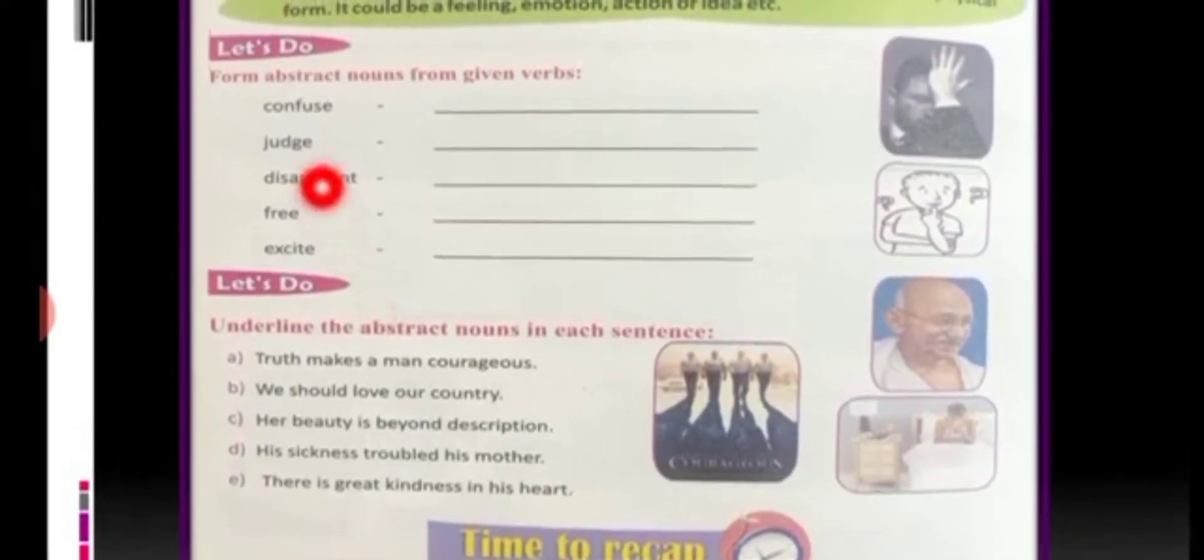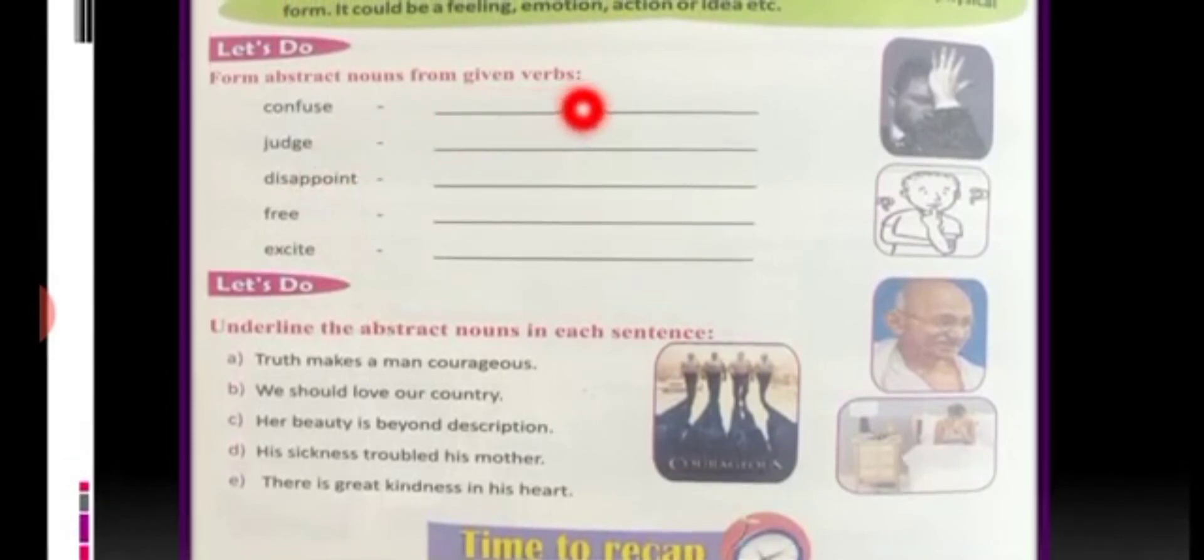Now, let's do form abstract nouns from the given verbs. Confuse, confusion. Judge, judgment. Disappoint, disappointment. Free, freedom. Excite, excitement.